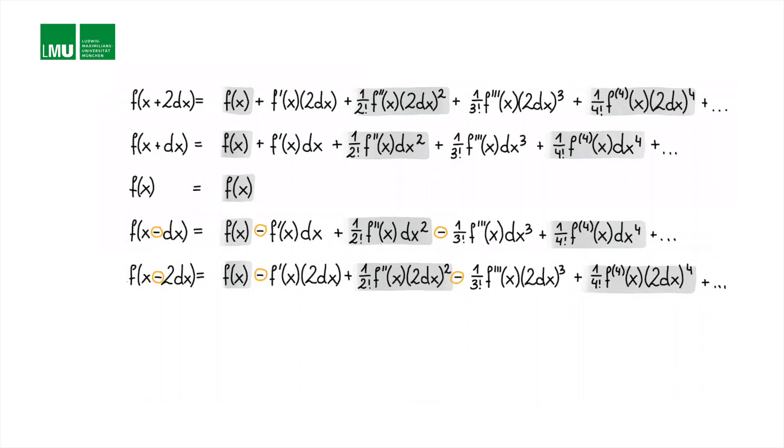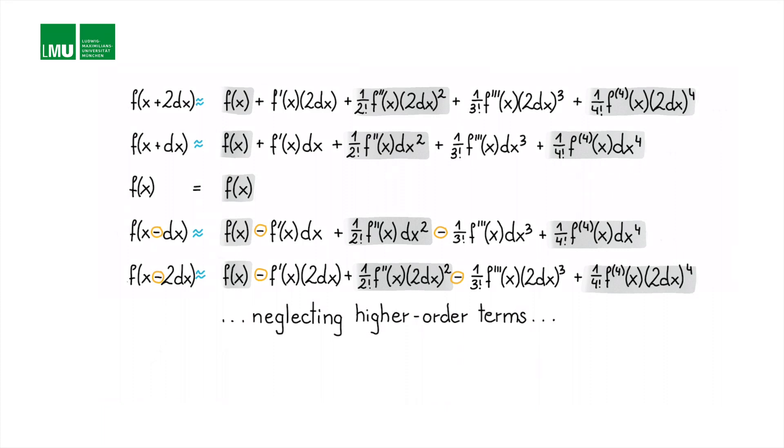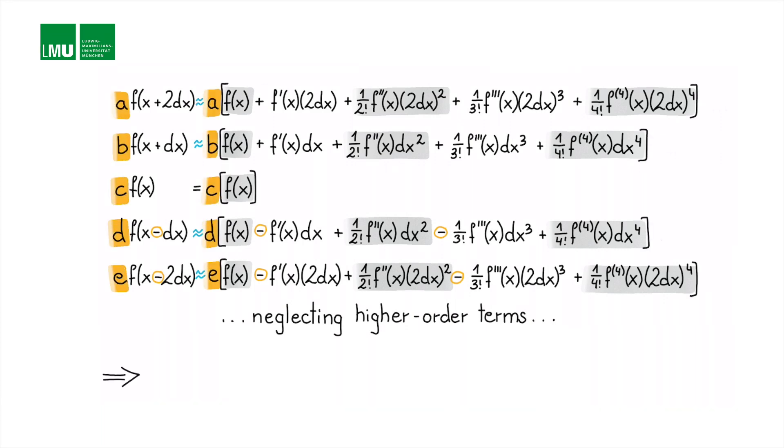We are now seeking five coefficients — five weights: a, b, c, d, e. We multiply the first, second, third, and so forth equations with these coefficients and sum everything up. We have to go to fourth order in our Taylor series to be able to come up with a five-by-five system matrix that we can invert.